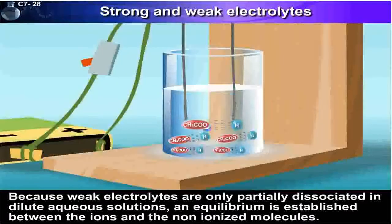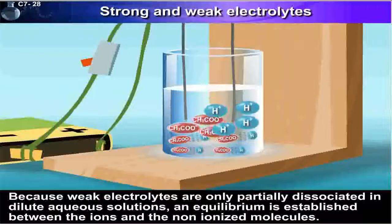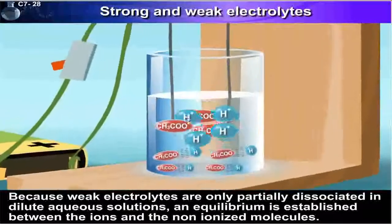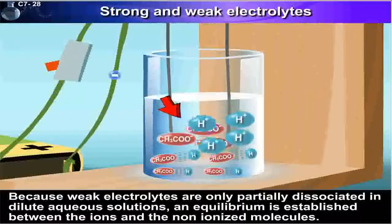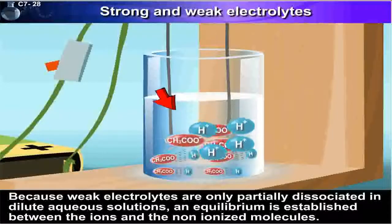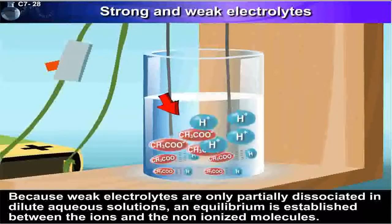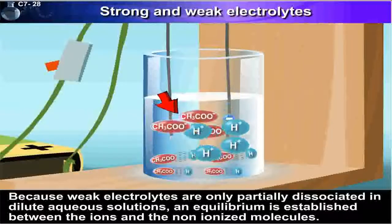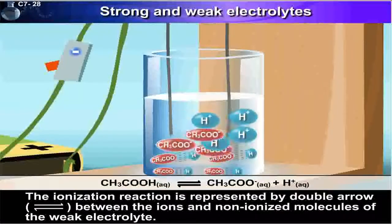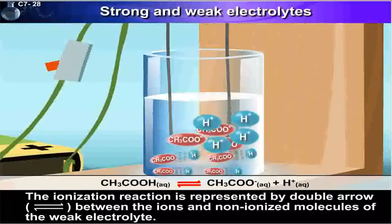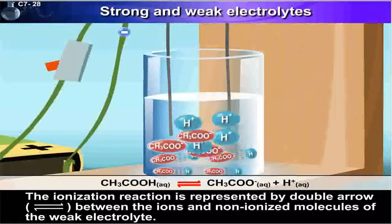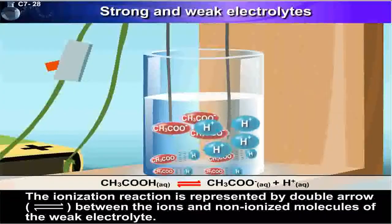Because weak electrolytes are only partially dissociated in dilute aqueous solutions, an equilibrium is established between the ions and the non-ionized molecules. The ionization reaction is represented by double arrow between the ions and non-ionized molecules of the weak electrolyte.